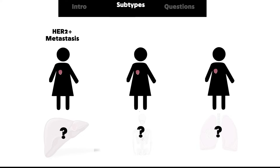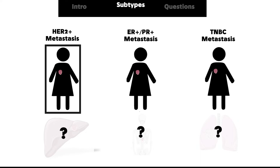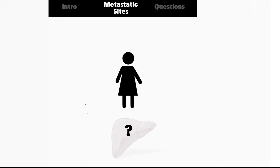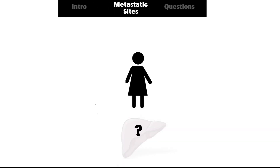Breast cancer metastasis has three subtypes: first is the HER2 positive metastasis, second is ER positive and/or PR positive metastasis, third is triple negative breast cancer metastasis. Let's decipher the molecular mechanism behind each one of them. Let's start with the HER2 positive metastasis.